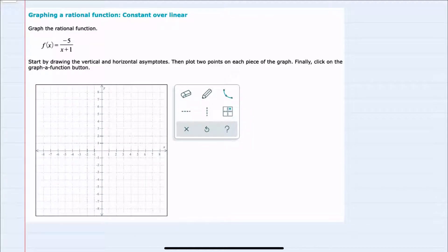In this video, I'll be helping you with the Alex problem type called graphing a rational function constant over linear. Our function here, f of x, has the constant negative 5 in the numerator, x plus 1 is the linear denominator, and we're told that we should start by drawing the vertical and horizontal asymptotes, and then to plot two points on each piece of the graph.